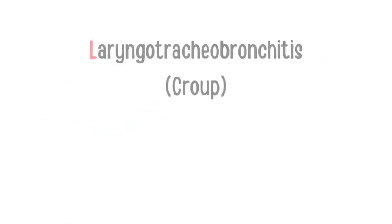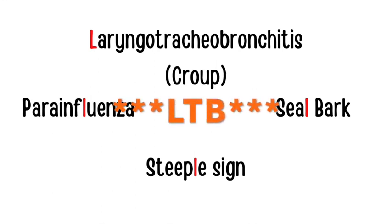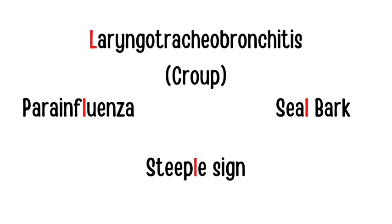Croup is actually called laryngotracheobronchitis, or LBT for short. LBT is caused by the parainfluenza virus, and these patients typically have a seal-like bark. On x-ray you can see the steeple sign. The L's help remember the key features: L for laryngotracheobronchitis, L in parainfluenza, L in steeple sign, and L in seal bark.